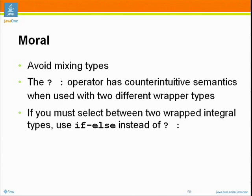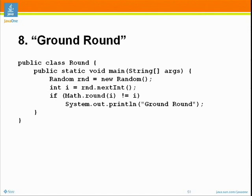That was a fine problem and I have one last problem for you — the last problem of the day — called 'Ground Round.' The reason is it involves Math.round. All we do is generate a random integer, and if the rounded value of that integer is unequal to the integer itself, we print 'ground round.' Round takes a number and moves it to the nearest integer — and the nearest integer to an integer was itself. So you should get back the same integer. This should be the identity function on ints.